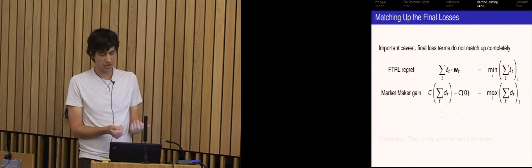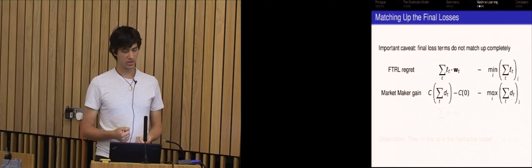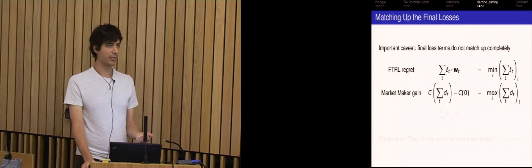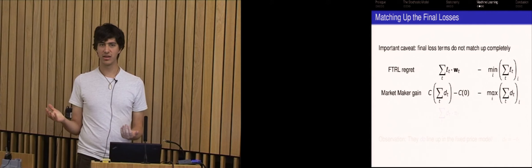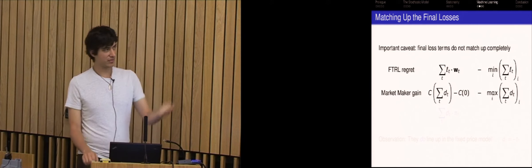You're choosing, by which I mean that the market is choosing prices in the same way that the follow the regularized leader is choosing distributions. But one thing that doesn't quite match up is the final loss terms. So first I have the regret which I just showed. And the second term, the second line is the gain from the market maker. So basically the revenue of the market maker is these differences in potentials.